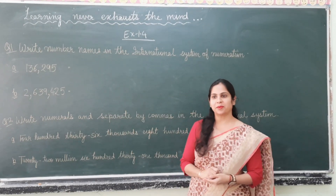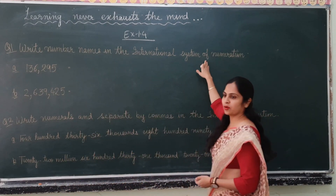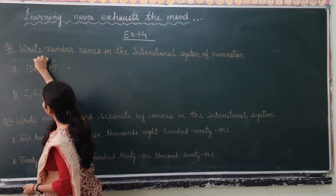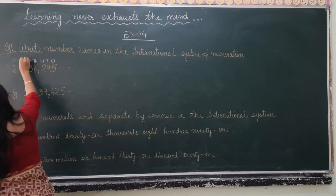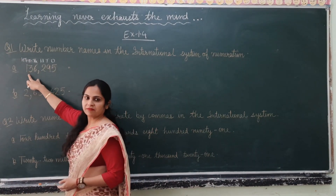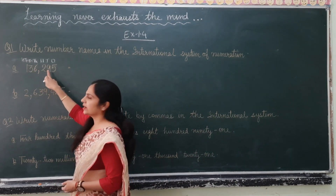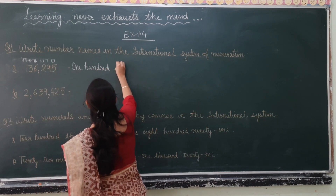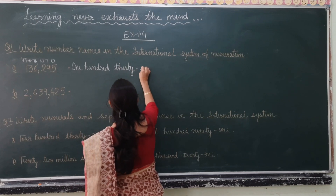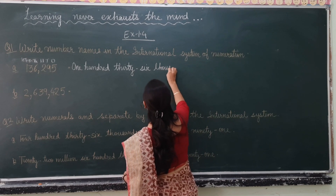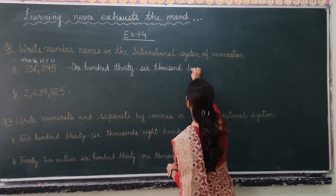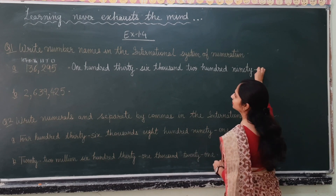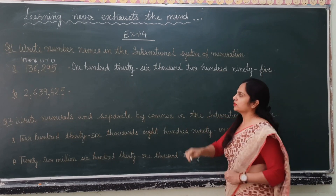Exercise 1.4, Question 1: Write number names in the international system of numeration. First, we write the places: ones, tens, hundreds, thousands, ten thousands, and hundred thousands. The number is 136,295. Its number name is: one hundred thirty-six thousand, two hundred ninety-five.